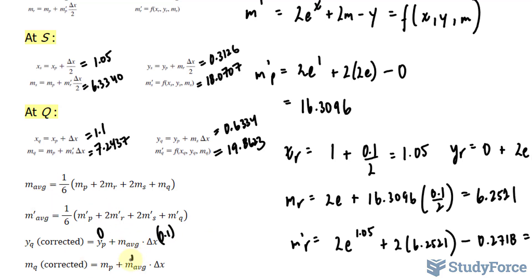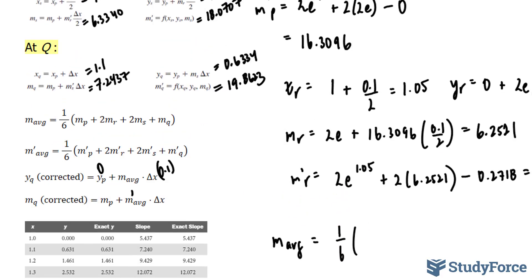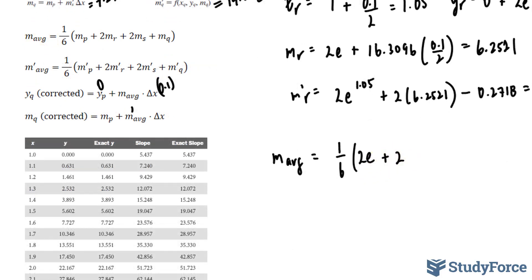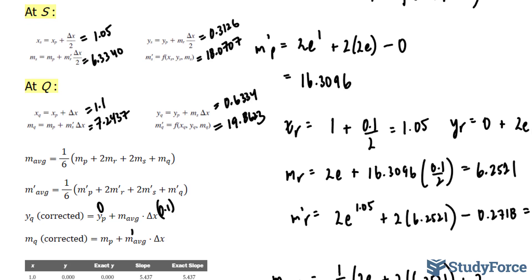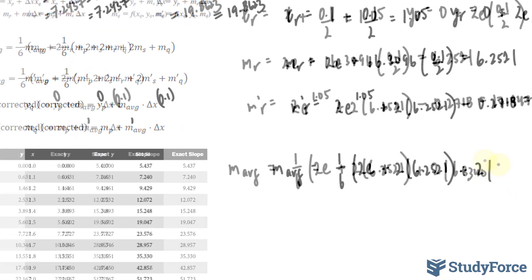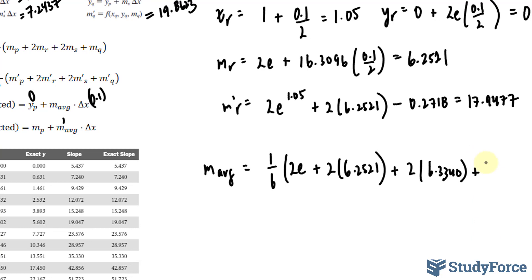And to find m_average, we use these two formulas. There's a mistake here, this should be y'. So let's go ahead and do that. Let's find m_average. Using the formula, 1/6 (m_P was 2e plus 2 times m_R, which we found in our own calculations to be 6.2521, plus what we found for m_S, and that's shown right here, 6.3340. And finally, what we found for m_Q, which is 7.2437). Putting this into your calculator, you should end up with the following number.